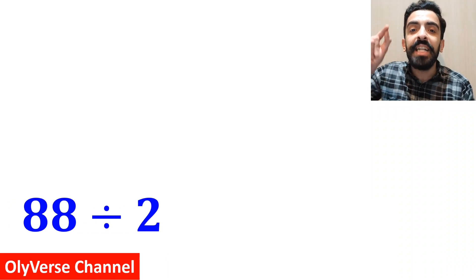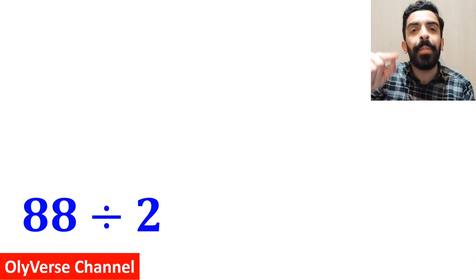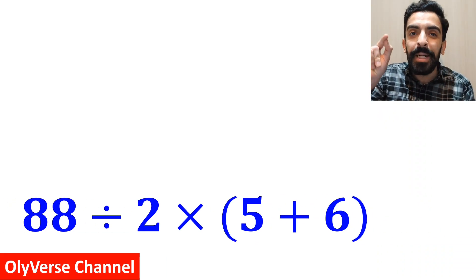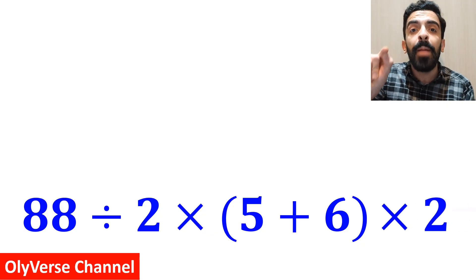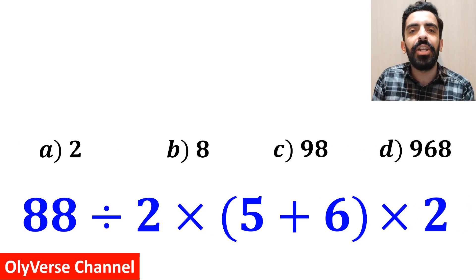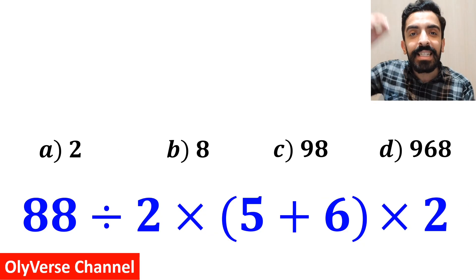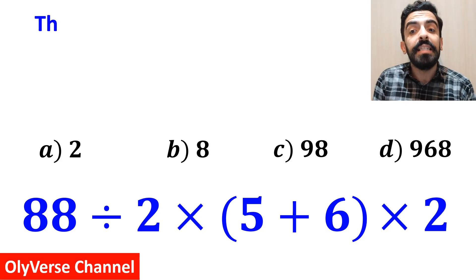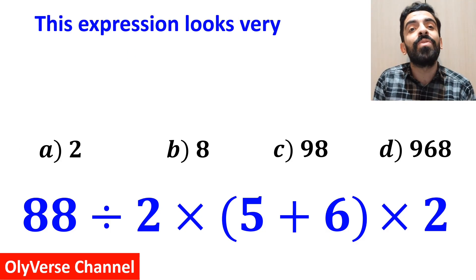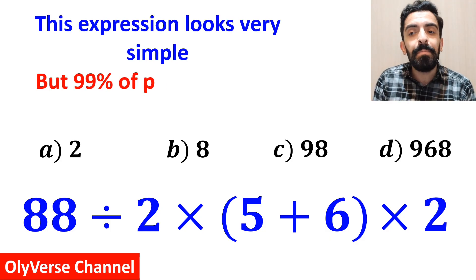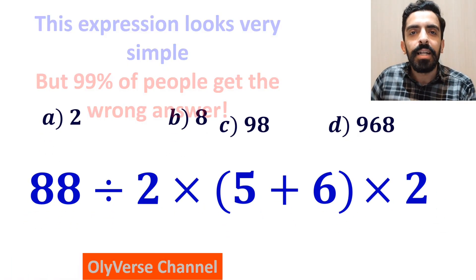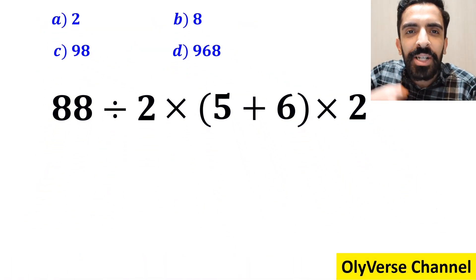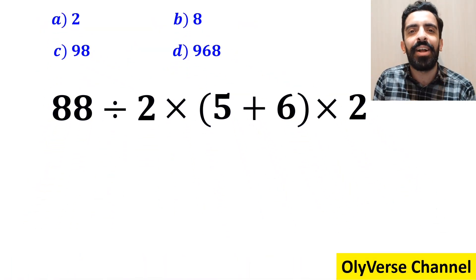What is the value of the expression 88 divided by 2 multiplied by open parenthesis 5 plus 6 close parenthesis and multiplied by 2? Which option do you think is the correct answer to this question? This expression looks very simple, but 99% of people get the wrong answer. Let's go through this question step by step and solve it together.